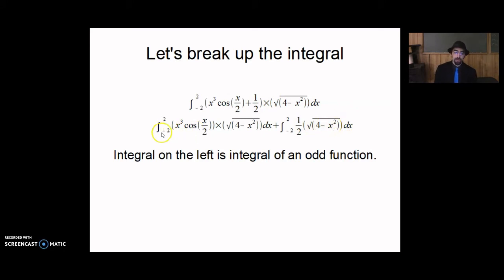So, let's worry about this integral on the left first. Integral from negative 2 to 2 of x cubed cosine x over 2 times square root of 4 minus x squared dx. We'll notice this whole function, the entire integrand, is actually an odd function. That means it has rotational symmetry about the origin.